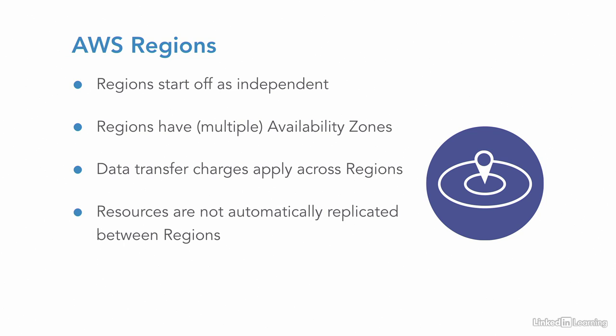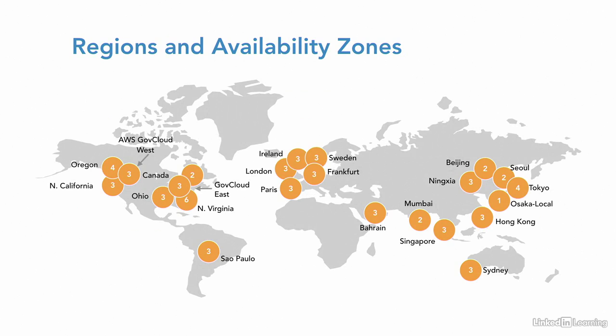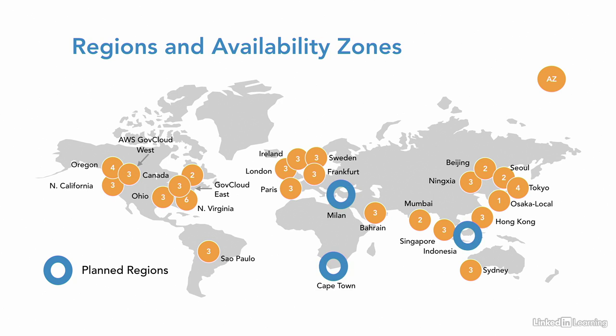Resources are not automatically replicated between regions — regions start off as independent entities. Amazon has many regions around the world, and the regions are divided into availability zones. You can see in the yellow circles that there are a number of availability zones per region, at least two. At the time of recording, there were planned regions coming online soon for Milan, Cape Town, and Indonesia — you might find these are already online. There are additional regions available, so it's up to you where you want to work.